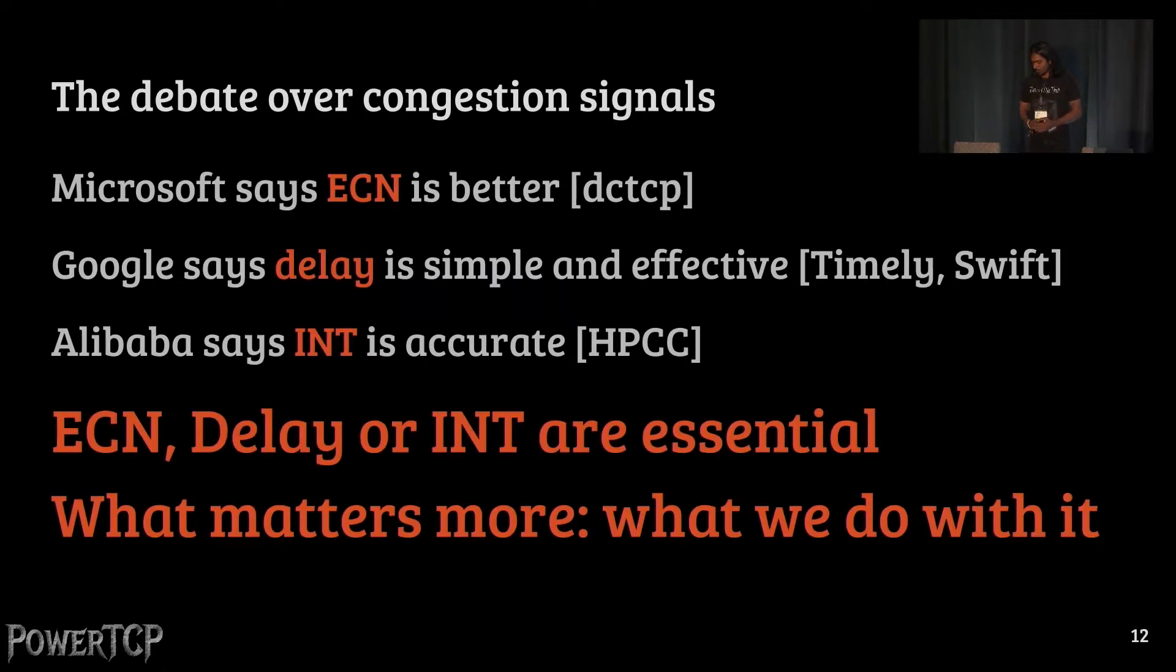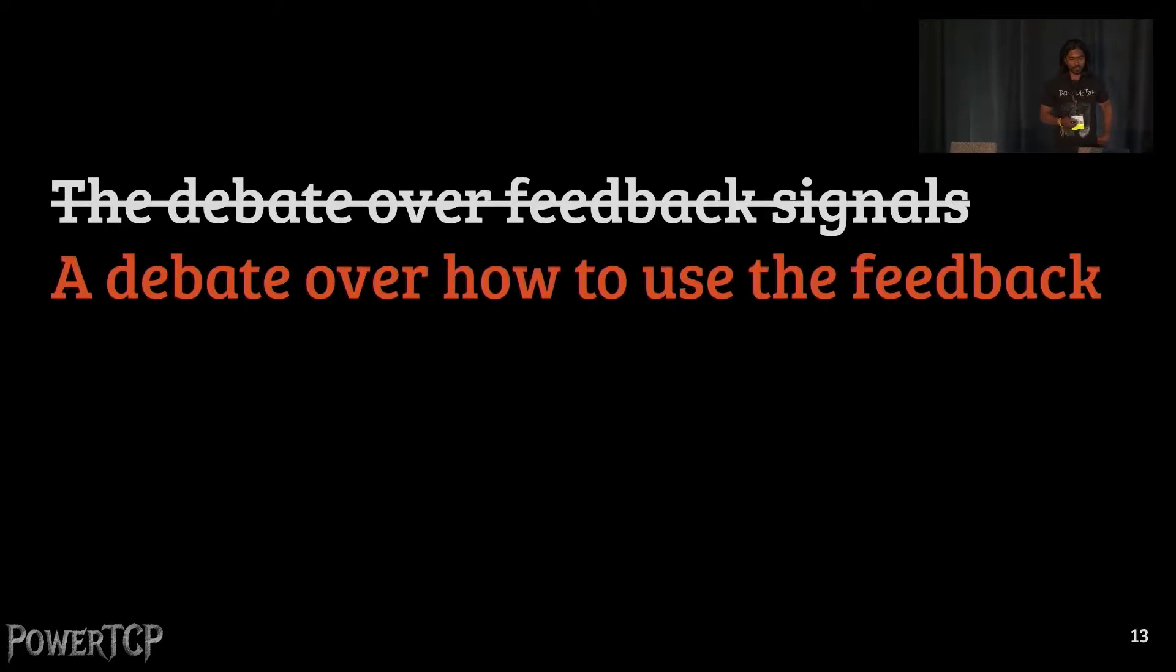Apparently, now we are in a debate over which congestion signal is more accurate to measure. In the past, Microsoft says ECN is better. Google said delay is simple and effective. Alibaba says in-network telemetry is even more accurate to measure. In this work, we say ECN, delay, INT are all essential for feedback. But what we do with it matters more.